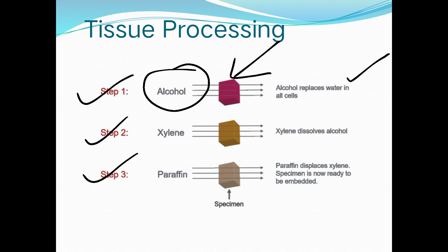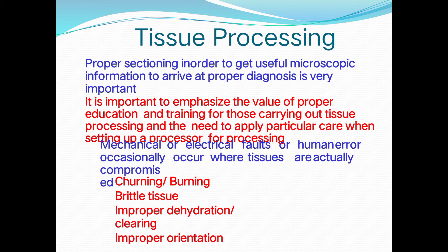Proper sectioning for accurate microscopic information and diagnosis is very important. Human error or mechanical fault occasionally compromises tissue. Problems include churning or burning of the tissue, brittle tissue, improper dehydration leading to improper clearing and improper orientation, and ultimately damage to the tissue or inability to get good sections.